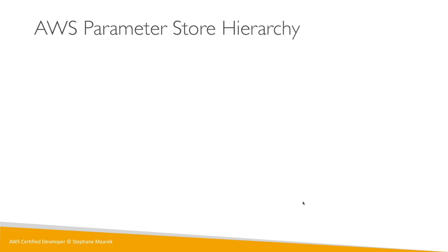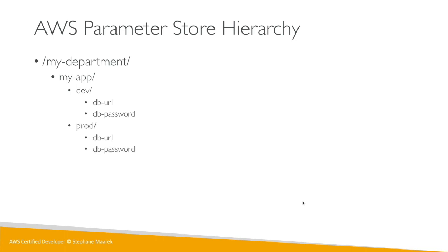In terms of hierarchy, parameters are organized like a tree. For example, under 'my-department/my-app/dev/' you have the database URL and database password, and under 'prod/' you have the same. You can have other apps and other departments. Think of it as a giant tree you can organize however you want — some people structure it by department, some by app, some by environment. What matters is that you define a consistent hierarchy and naming convention.